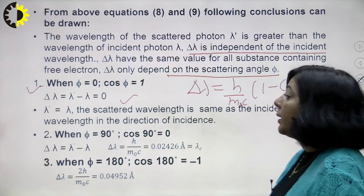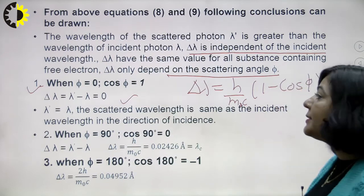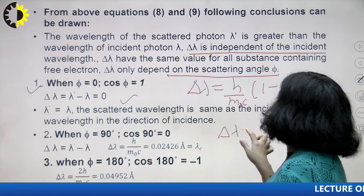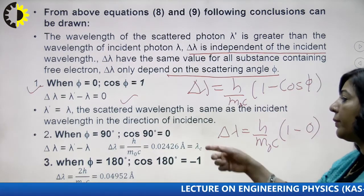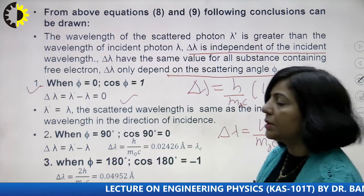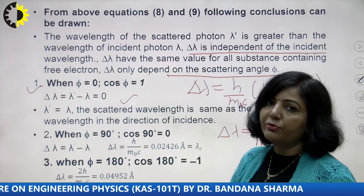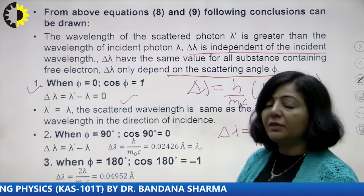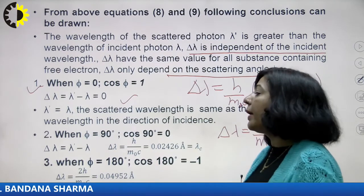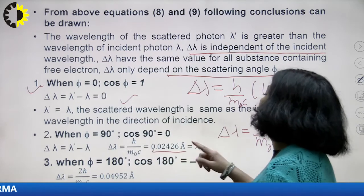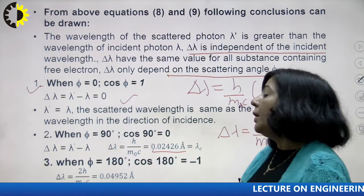Case 2: when φ = 90°, Δλ = (h/m₀c)(1 − cos90°) = h/m₀c. Substituting h = 6.625×10⁻³⁴ J·s, m₀ = 9.1×10⁻³¹ kg, c = 3×10⁸ m/s, the value of Δλ is approximately 0.0242 Å. Whatever the wavelength of incident light, if the angle of scattering is 90°, the Compton shift will be 0.0242 Å.